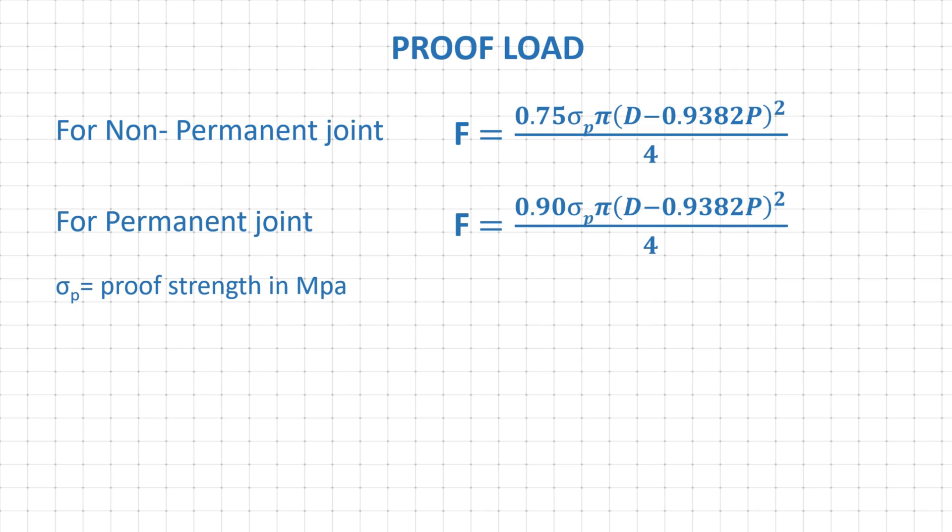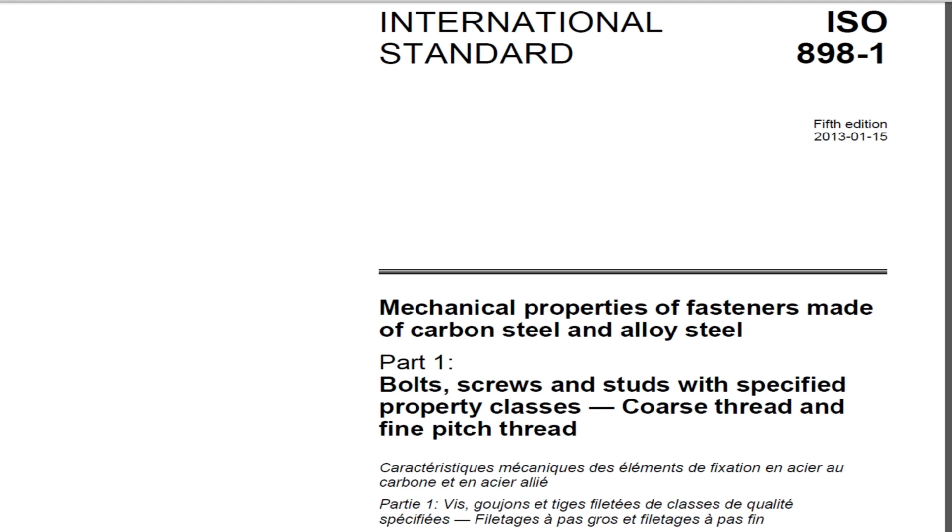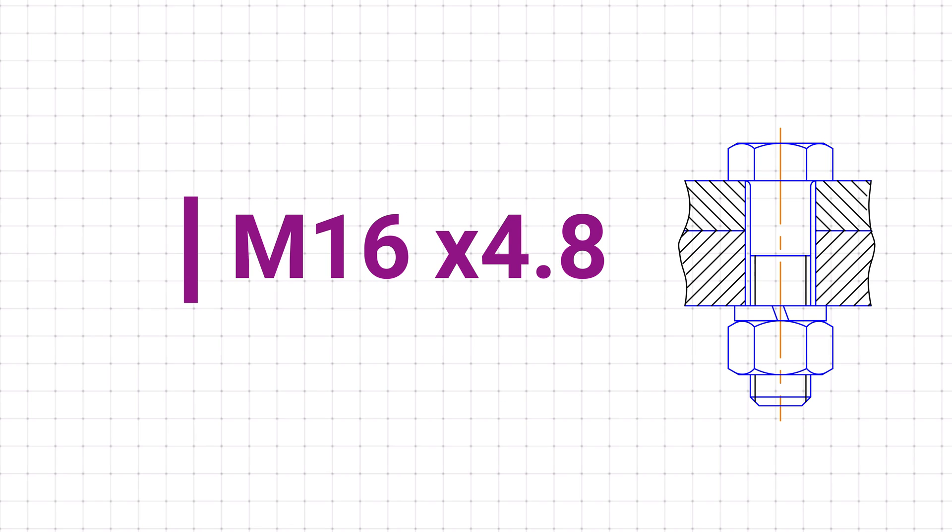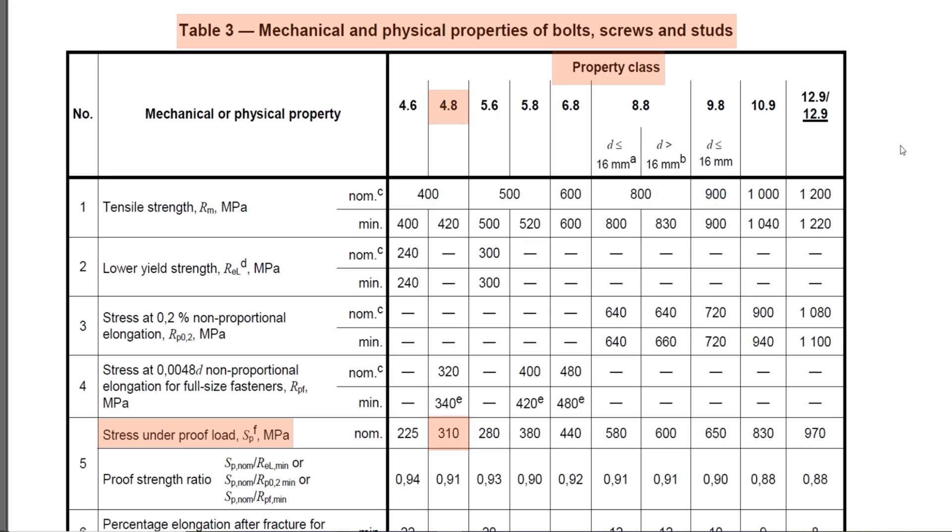Here symbol sigma is the proof strength in MPa and we can refer ISO 898 part 1 to calculate proof strength. Let's take an example of M16 class 4.8 bolt. As you can see here, for M16 class 4.8 bolt, proof strength value is 310 MPa.